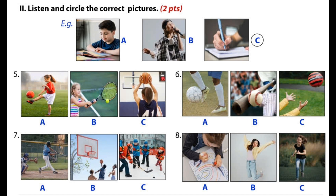Now listen again. Number five: she can play tennis. Number six: he's kicking the ball. Number seven: they can play basketball. Number eight: she's running. That's the end of part two.